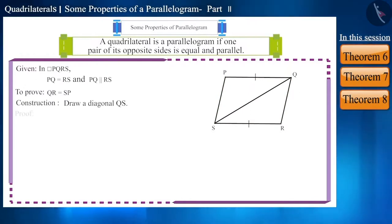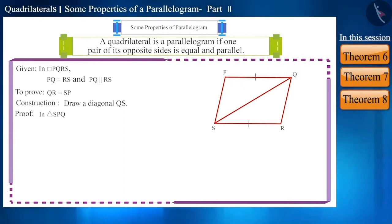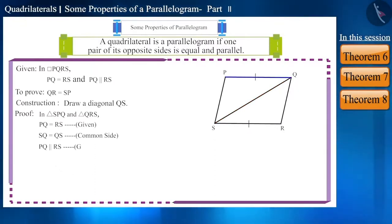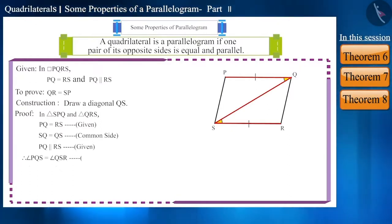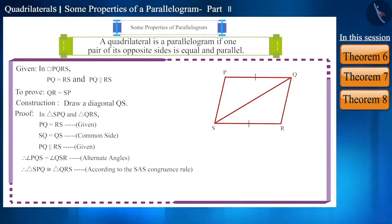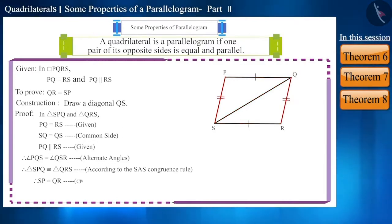Here, we will draw diagonal QS. Now we have triangle SPQ and triangle QRS. In triangle SPQ and triangle QRS, side PQ is equal to side RS, side QS is the common side, and side PQ is parallel to side RS. Therefore, angle PQS is equal to angle QSR because these are alternate angles. Therefore, triangle SPQ and triangle QRS are congruent according to the SAS congruence rule. The corresponding sides of congruent triangles are equal. Therefore, side SP is equal to side QR.